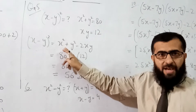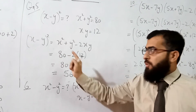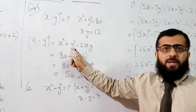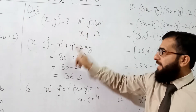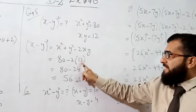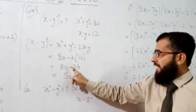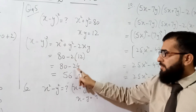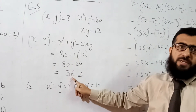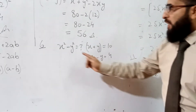Now put in the values: x² + y² = 80, and xy = 12, so 2xy = 24. Therefore (x − y)² = 80 − 24 = 56.